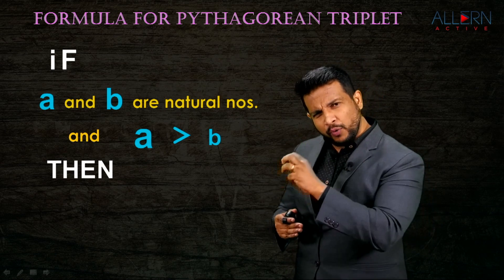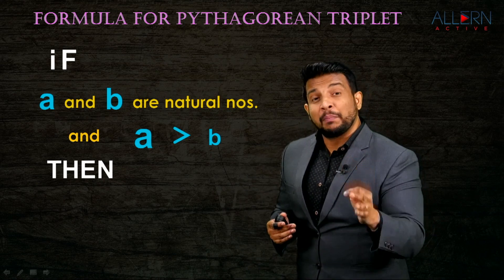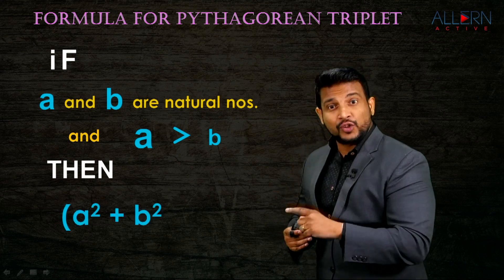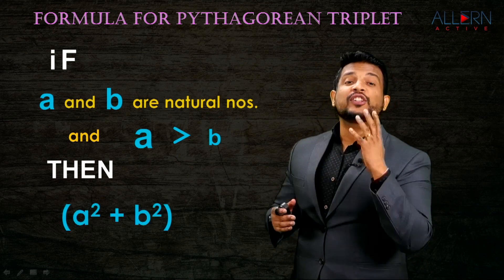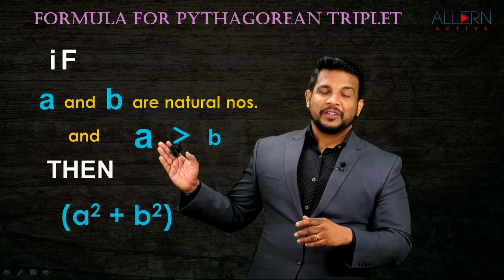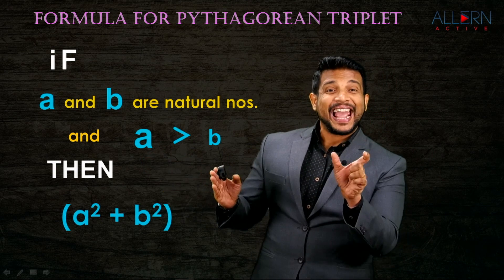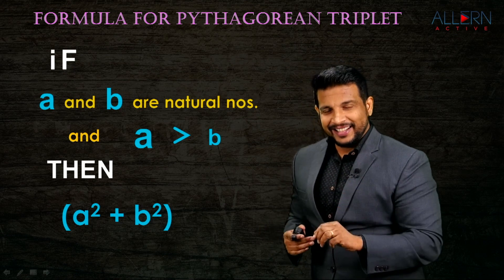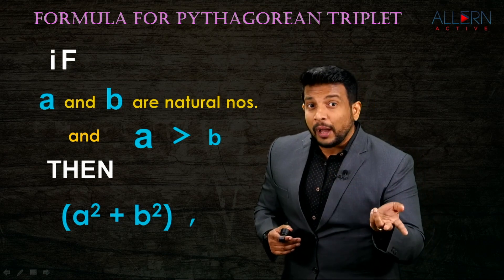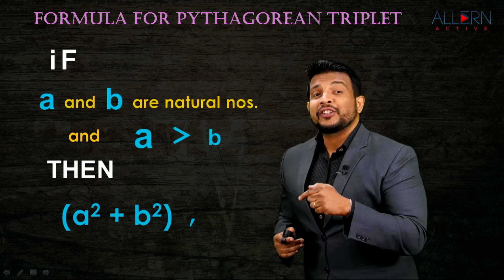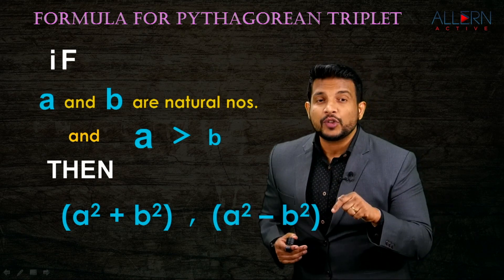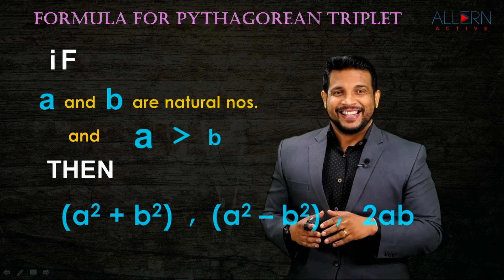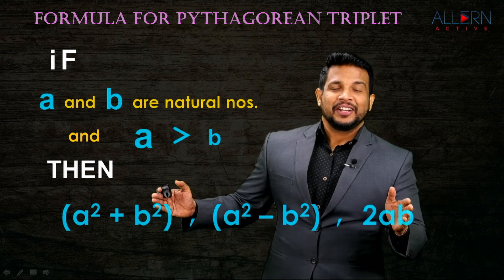The three numbers in the Pythagorean triplet are as follows. The largest number is A² + B² - that means square of A plus square of B. The second number is A² - B². And the third number is 2AB. That is nothing but the Pythagorean triplet formula.